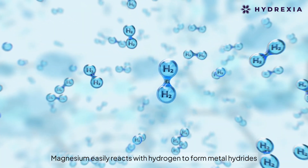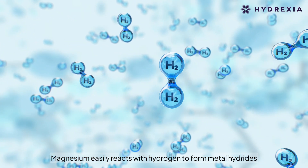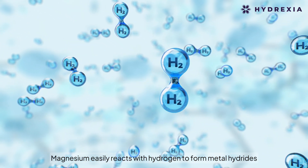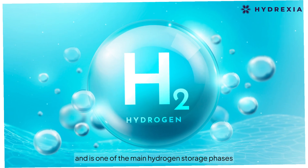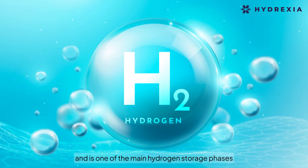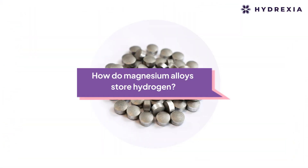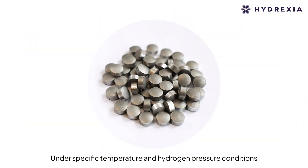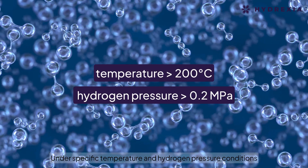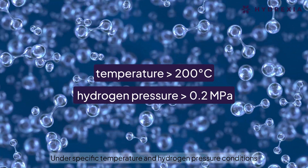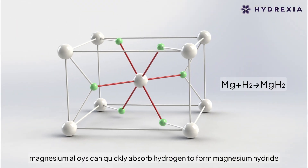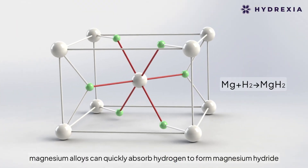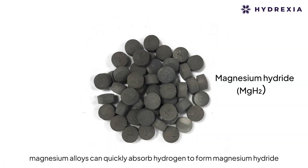Magnesium easily reacts with hydrogen to form metal hydrides and is one of the main hydrogen storage phases. Under specific temperature and hydrogen pressure conditions, magnesium alloys can quickly absorb hydrogen to form magnesium hydride.